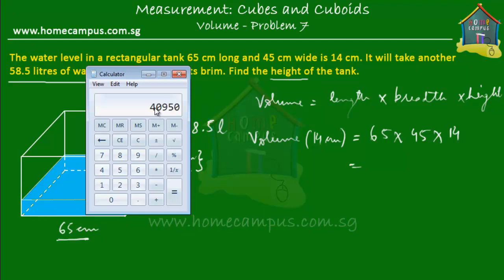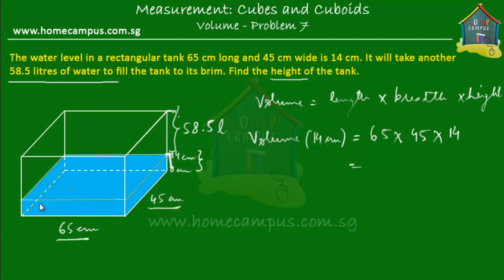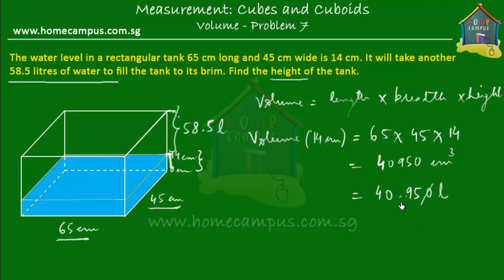That is equal to 40,950 cm³. Since 1,000 cubic centimeters equals 1 liter, 40,950 cubic centimeters is equal to 40.95 liters. We divide 40,950 by 1,000 to get the volume of water in liters, which is 40.95 liters.